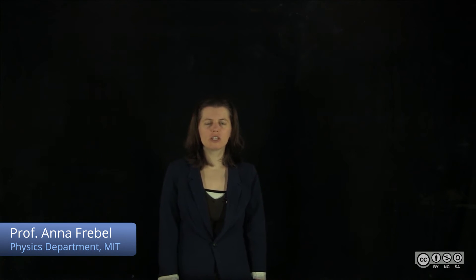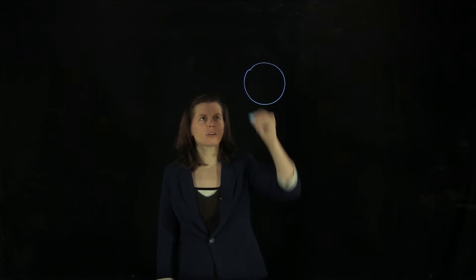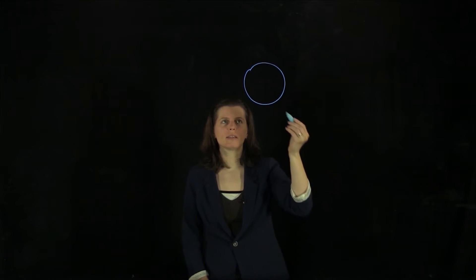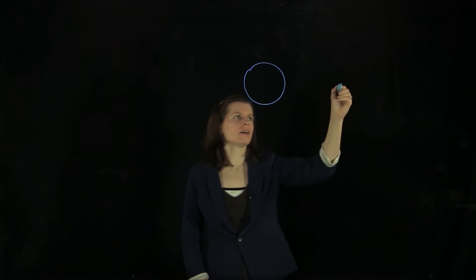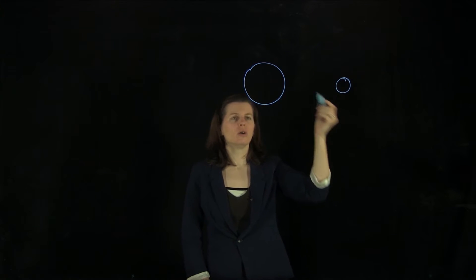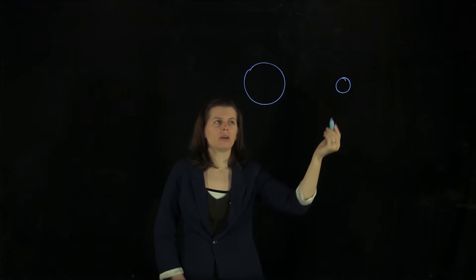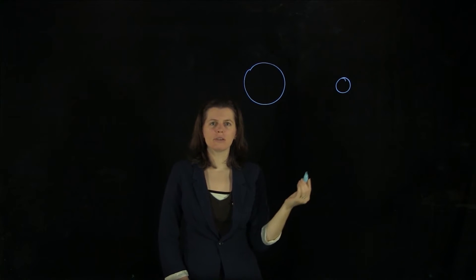Let's consider the universal gravitational law a little bit more. Let's consider two objects in space. Let's say this is the sun, and we have the Earth here, or the Earth and the moon. And of course, they're orbiting each other.